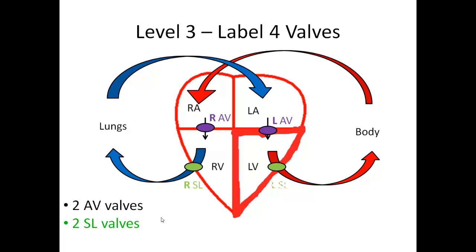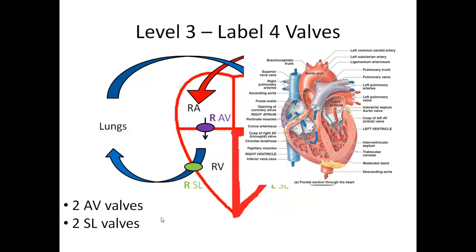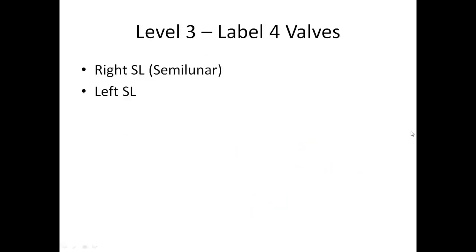Moving on to our SL valves — we have a right and a left. SL is for semilunar valves. I'm drawing a diagram to help you get from point A to point B answering exam questions, not yet for labeling the regions of the heart — that's Level 5. If you look, there's a line coming out from the right ventricle laterally, but in the real heart the vessel actually goes up and out, with the valve located right there. I'm not trying to draw it perfectly at this point; in the other levels we'll draw the lines better.